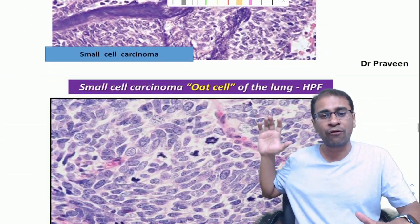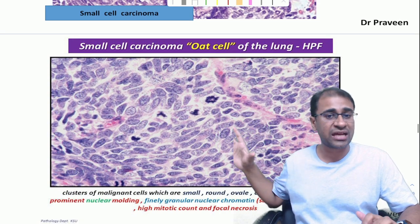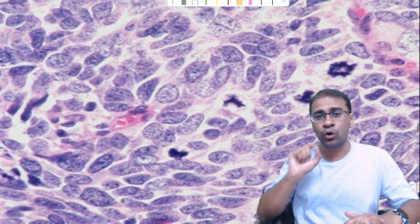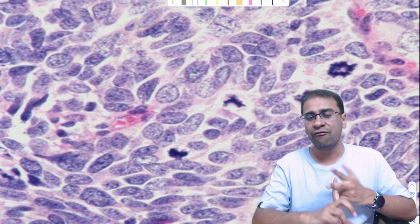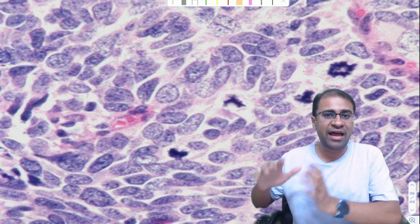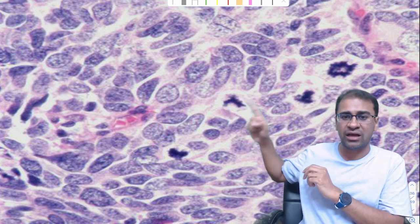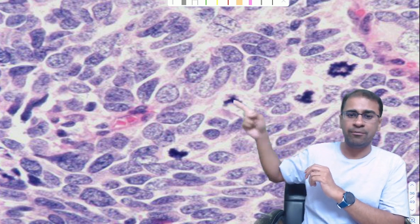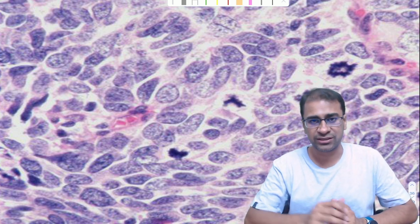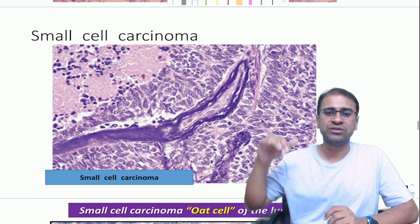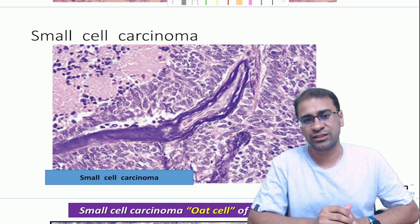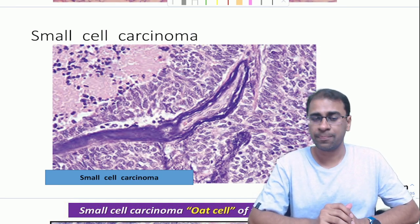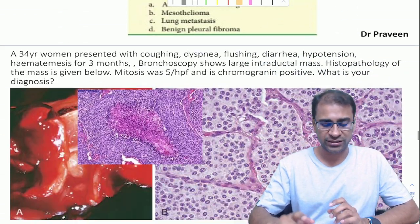Then comes small cell carcinoma, also called oat cell carcinoma, which shows salt-and-pepper chromatin. They belong to neuroendocrine tumors and can lead to carcinoid syndrome with diarrhea, flushing, and cyanosis. They have a very high mitotic rate, and the darker mitotic figures are visible. These tumors can lead to what is called the Azzopardi effect, which appears as bluish staining in the vessels.